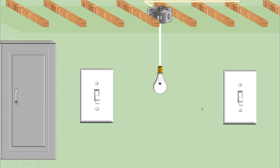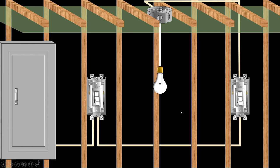If we take a look at what we've got here, we have one switch, our second switch, and then our light fixture in the center. We're going to pull the drywall and switch plates off and look at what's behind. We have our electrical panel, and then the wiring goes out to our first switch box, from there to our second switch box, and then from the switch box up to our actual light fixture.